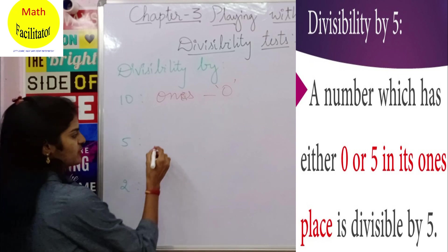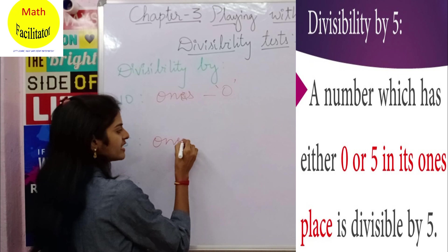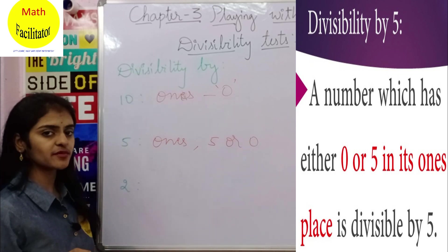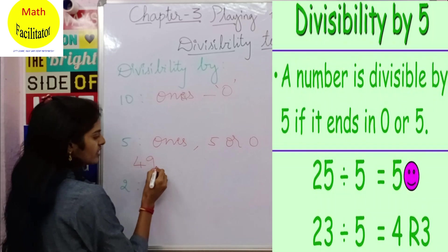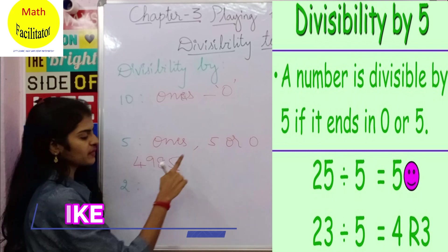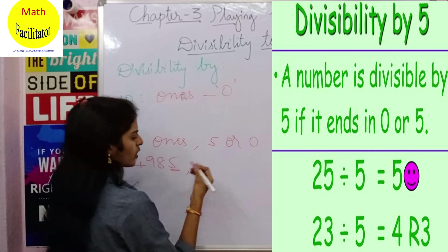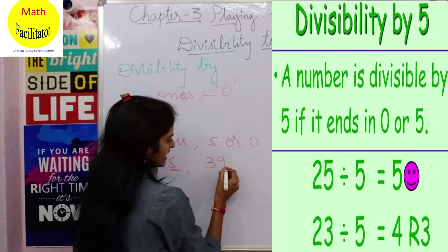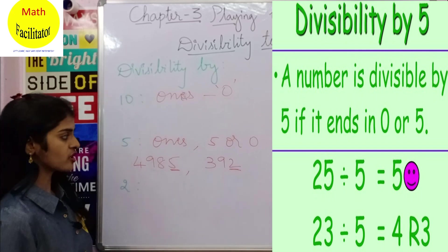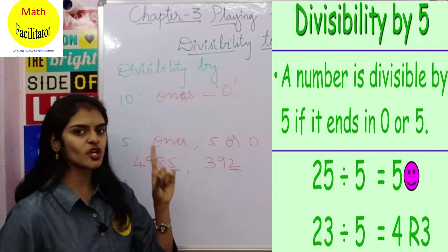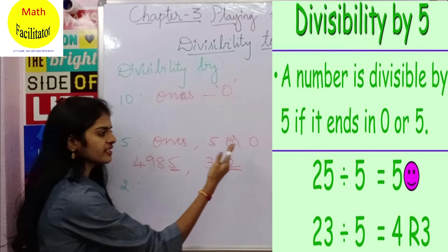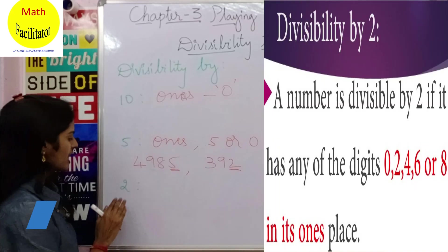Now let us check for 5. In the ones place, if you find a 5 or 0, then that particular number is divisible by 5. For example, 4985 — in the ones place you have 5, so it is divisible by 5. Another example: 392 — in the ones place you have 2, which is not 5 or 0, so this number is not divisible by 5.